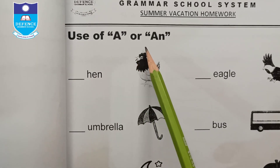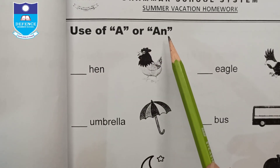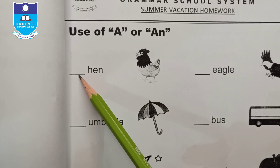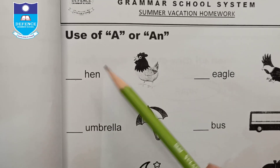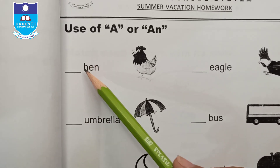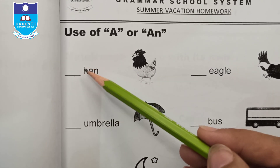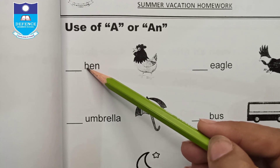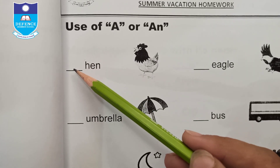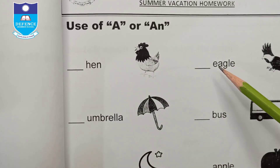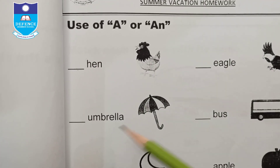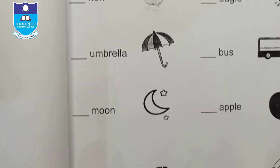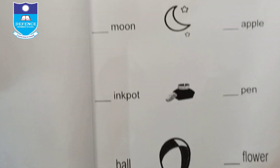Use of 'A' and 'An'. Write 'A' or 'An' by checking whether the word starts with a vowel or consonant. For example: a hen, an eagle, an umbrella. Similarly, solve all of these blanks.